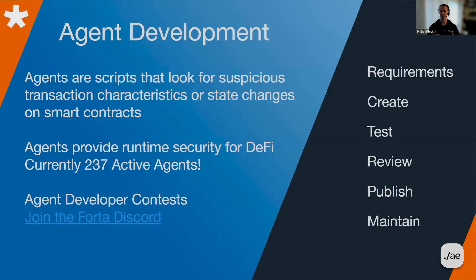These are agents that are constantly running, and they're looking for anything suspicious that occurs on the Ethereum blockchain or soon-to-be EVM-compatible blockchains — layer one, layer two, et cetera. So we're looking for transactions that look out of the ordinary, anomalous, something weird about them. That's what the agent is looking for.